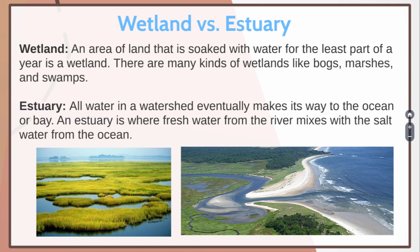Eventually, the water in a watershed will run into wetlands and estuaries — two different things to remember. A wetland is an area of land that is soaked with water for most of the year. There are many kinds of wetlands like bogs, marshes, and swamps. An estuary is where all the water in the watershed eventually makes its way to the ocean or the bay — it's where fresh water from our river mixes with the salt water from the ocean. We usually find wetlands along the estuaries, but the key difference is that the estuary is where salt water and fresh water are mixing, while a wetland is just any area of land that's wet.